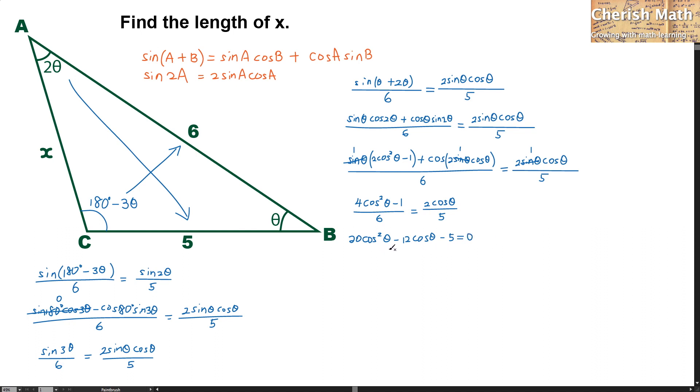This formula, in order to find what is the value of the cos theta, I will have to use the quadratic formula to get it. Now, let me use the quadratic formula to solve what is the value of cos theta here. That turns out 12 plus minus the square root of negative 12 squared minus 4 times 20 times negative 5.